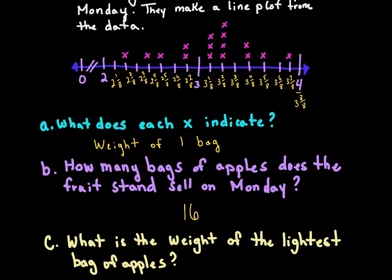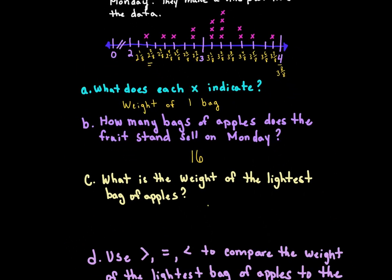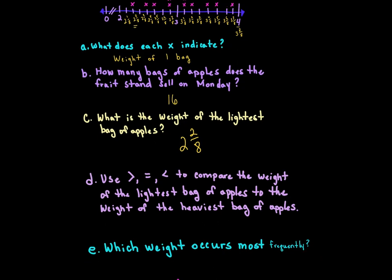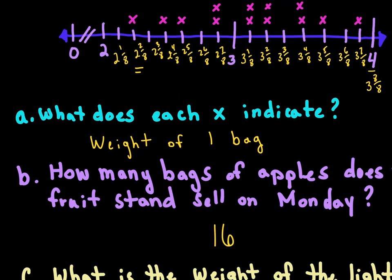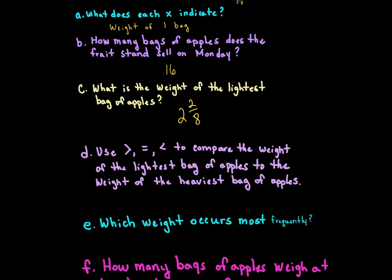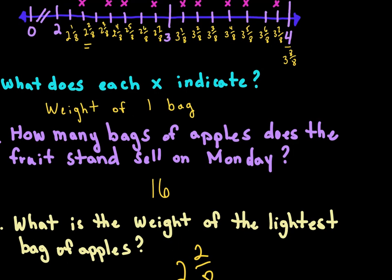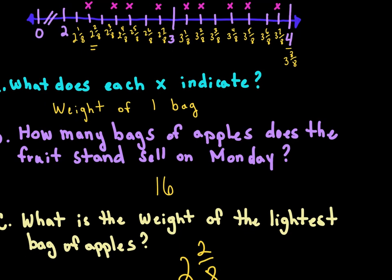What is the weight of the lightest bag of apples? The lightest weight measured is two and two-eighths. Now, using greater than, less than, or equal to, compare the lightest bag to the heaviest bag: two and two-eighths is less than three and seven-eighths, which is the largest measurement on the plot.